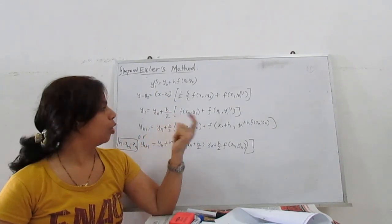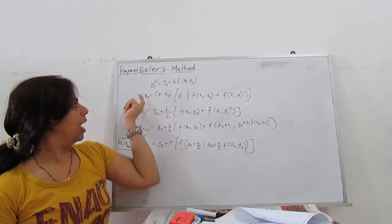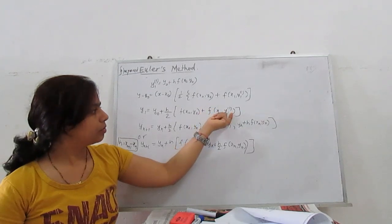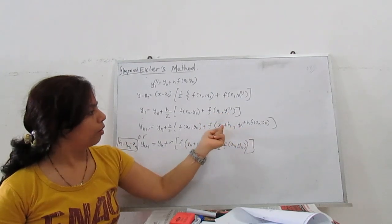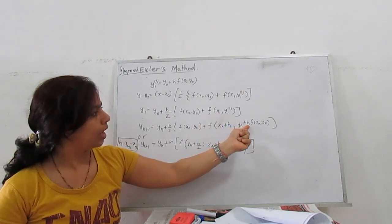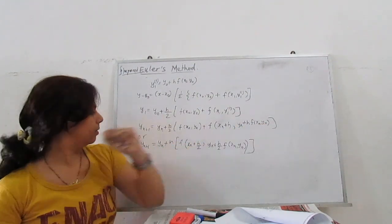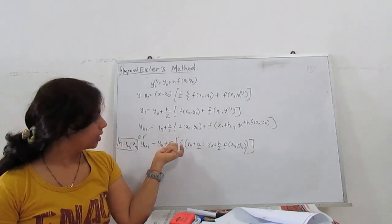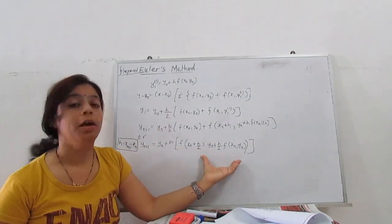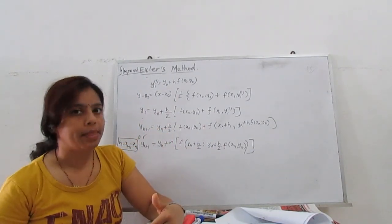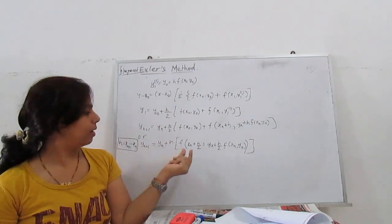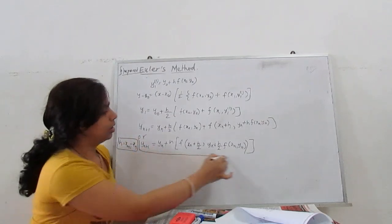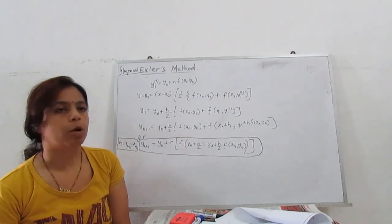It is more accurate compared to Euler's method because we take the average of the tangents at both points. Substituting x with x1 and y with y1, where x1 minus x0 = h: y1 = y0 + (h/2)·[f(x0, y0) + f(x1, y1*)]. Expanding to the general formula: y(n+1) = yn + h·f(xn + h/2, yn + (h/2)·f(xn, yn)). This can be rewritten using a midpoint function evaluated at the midpoint (xn + h/2, yn + (h/2)·f(xn, yn)).